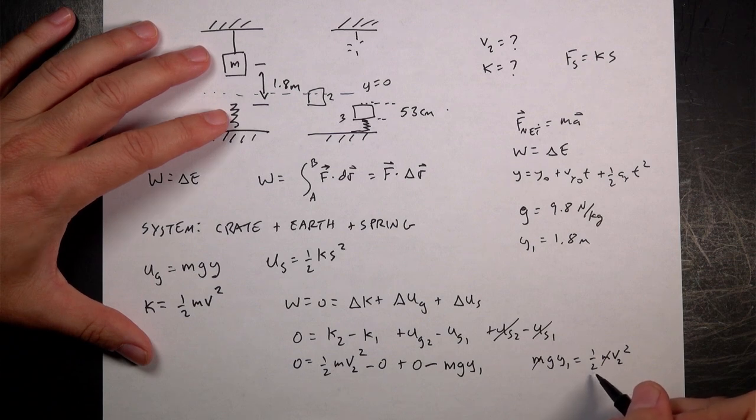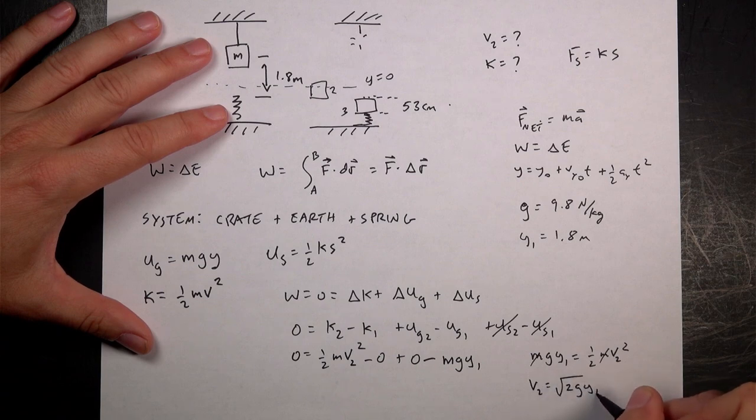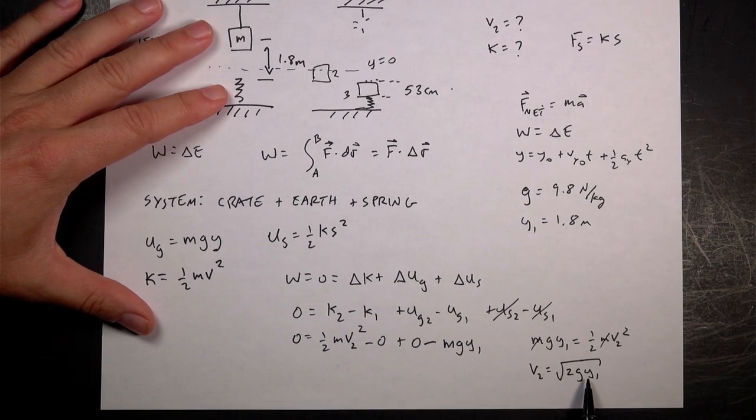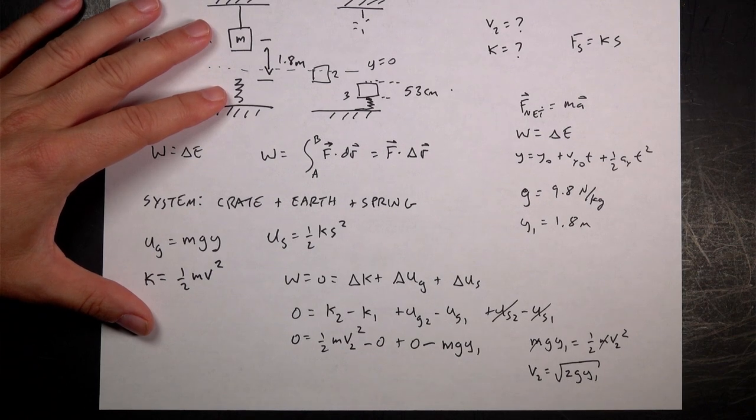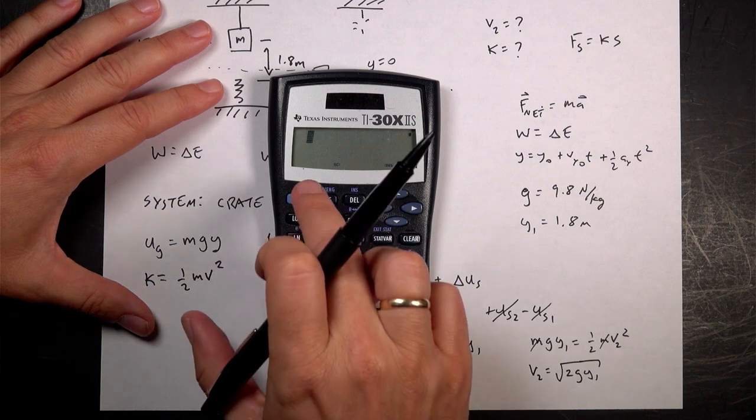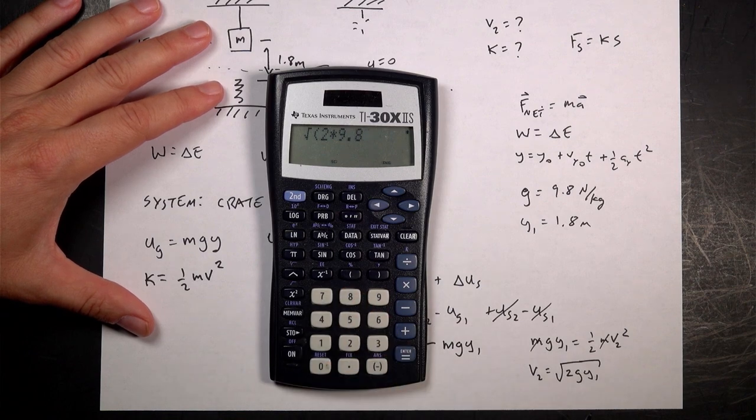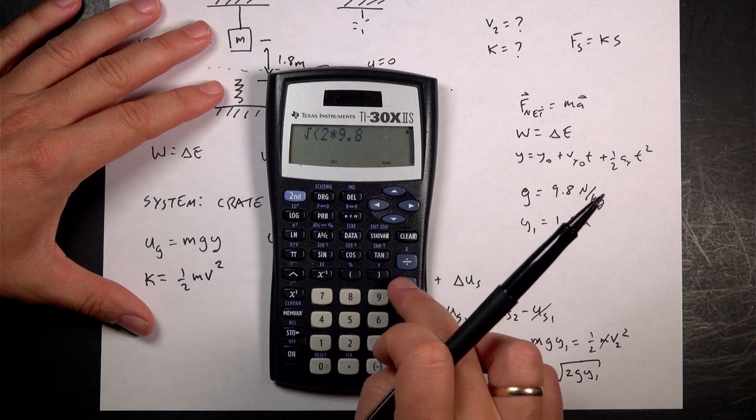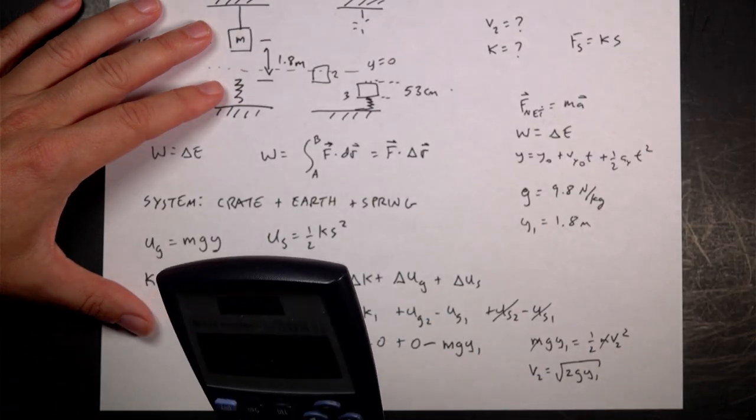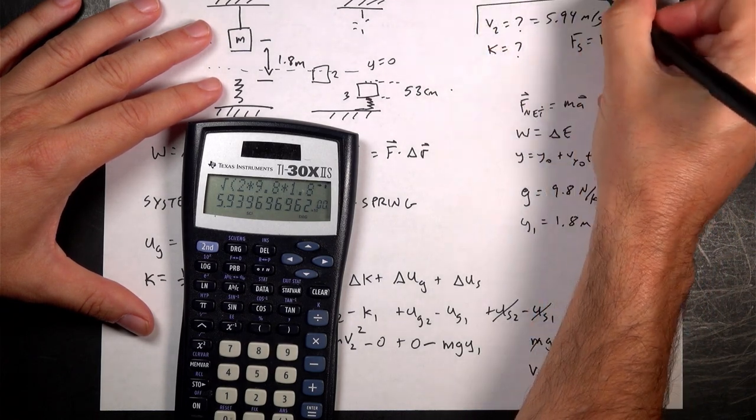So I have a simple equation. I get m g y1 is one-half m v2 squared. The mass cancels. v2 is going to be equal to the square root of 2 g y1. Let's get a number for that. Square root 2 times 9.8 times 1.8 equals 5.94 meters per second.